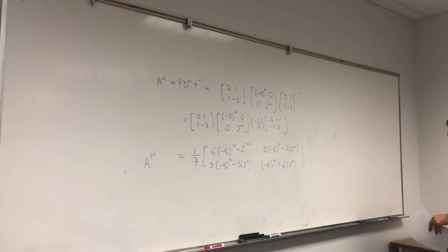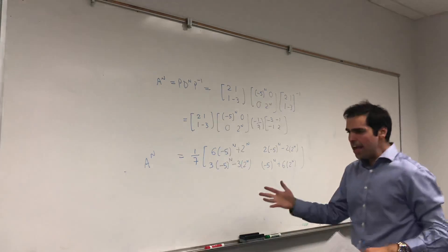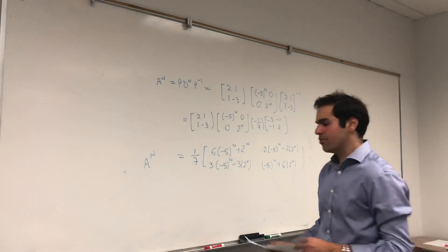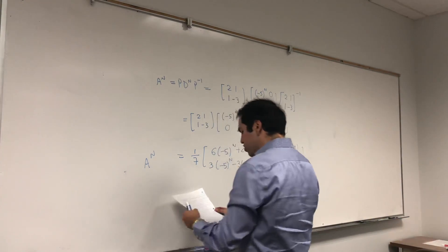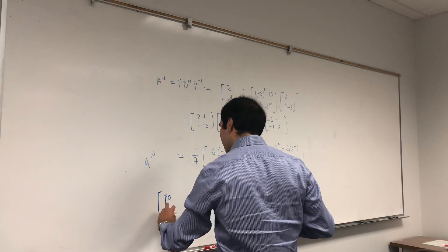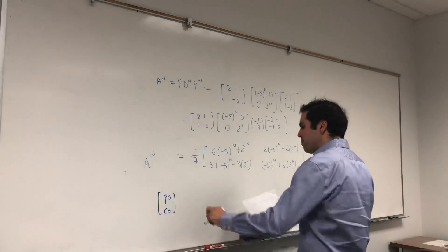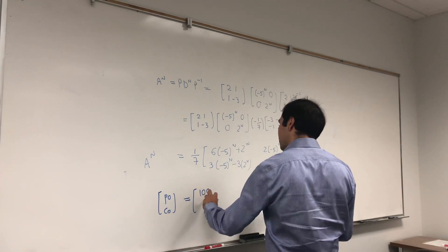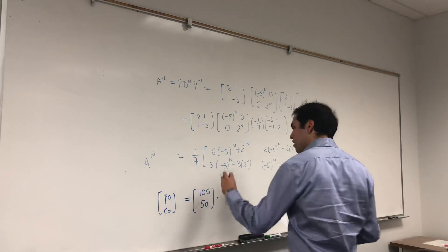This is our matrix A to the N. Now, why is that useful? Because remember, A is what allows us to go from the current round to the next round. So, suppose you start with P0, C0. I didn't know this marker would work, but anyway, P0, C0, initially we get 100, 50.